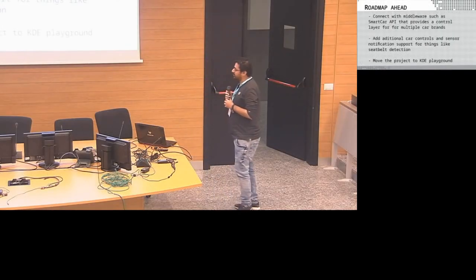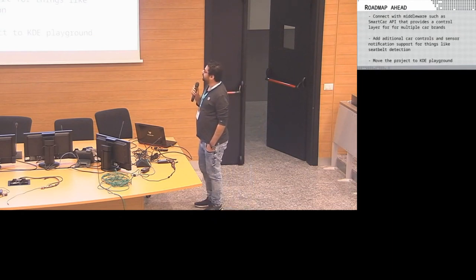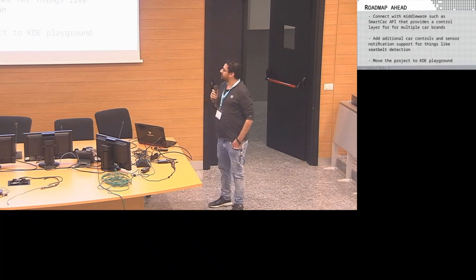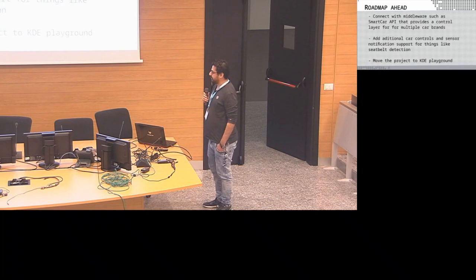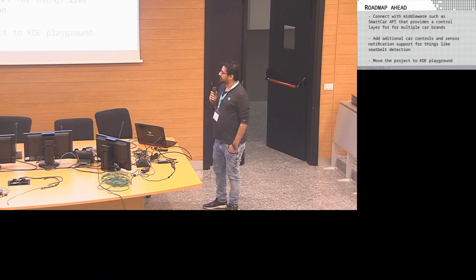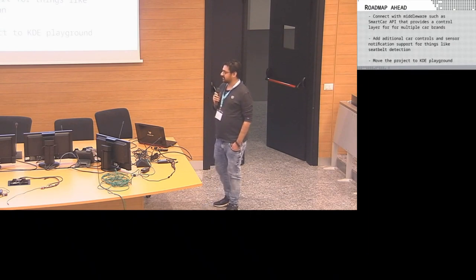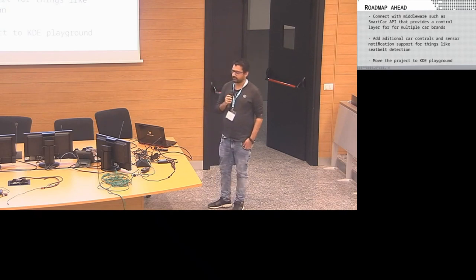Moving on, the roadmap ahead for this open-source infotainment system is to connect it with actual hardware — such as the SmartCar API, which provides a control layer between hardware and software for multiple car brands, currently supporting around 14 car brands. There will also be integration for additional controls, sensor notification support for things like seatbelt detection, and the project will be moved to KDE Playground from its current scratch repository.